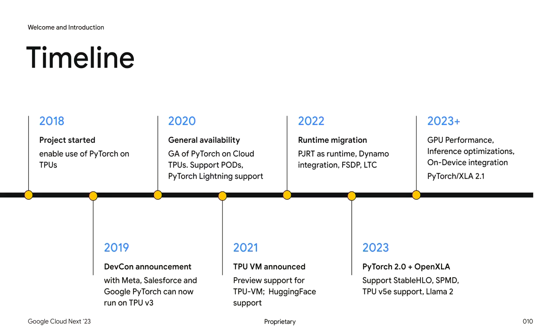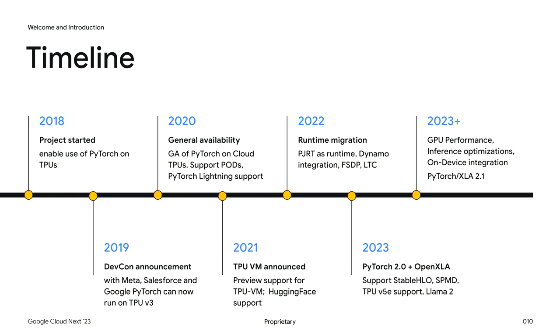The PyTorch XLA project started back in 2018 with close collaboration with Meta, and was announced at DEFCON 2019. In 2020, PyTorch XLA became generally available with support for Cloud TPU v3 pods and PyTorch Lightning. Over the following year, the team improved usability with TPU VM support and migrated to the same runtime as JAX. In 2022, work began on Torch Dynamo. Today, we are delighted to release PyTorch 2.1 with integration of OpenXLA, enabling large language models such as Llama 2 to run at very large scale on TPU v5e.